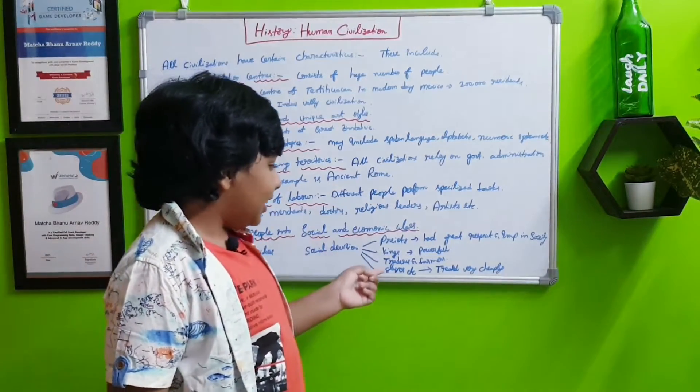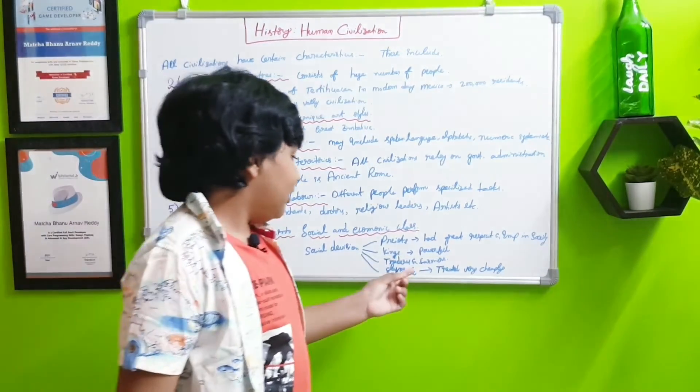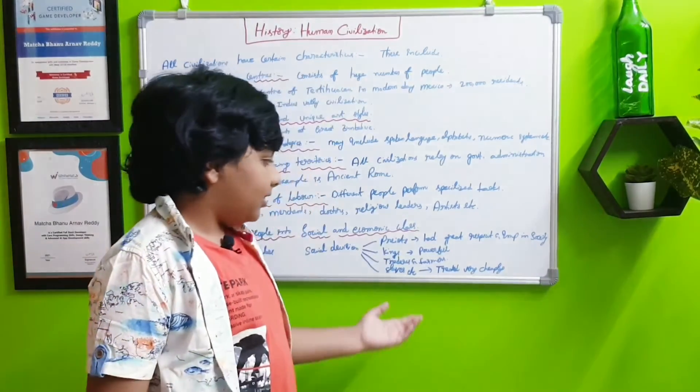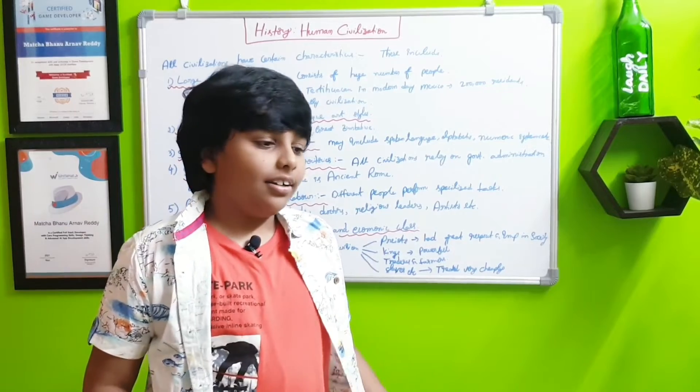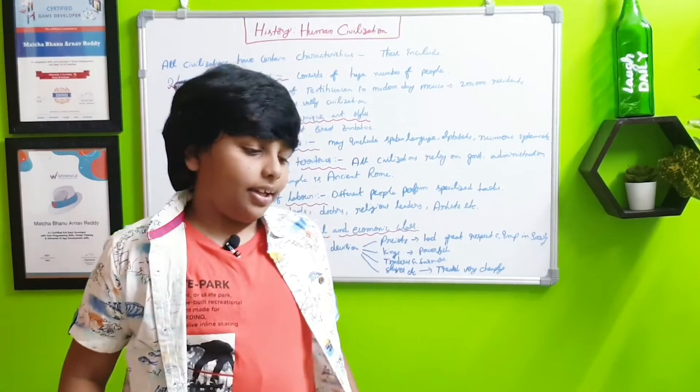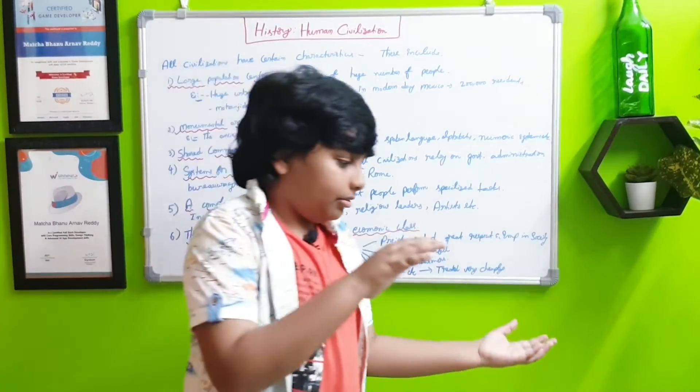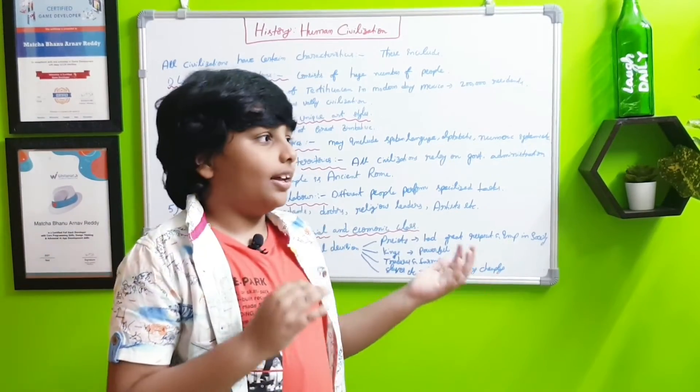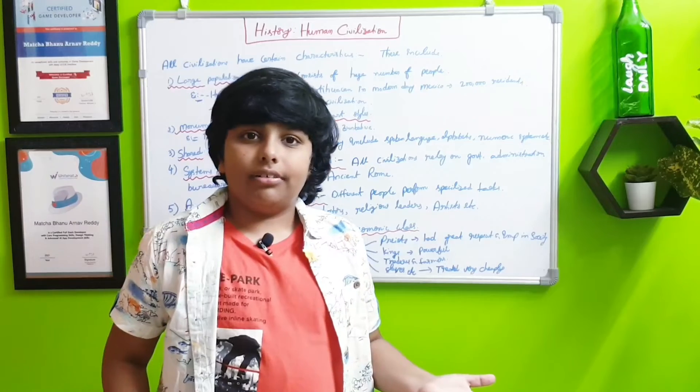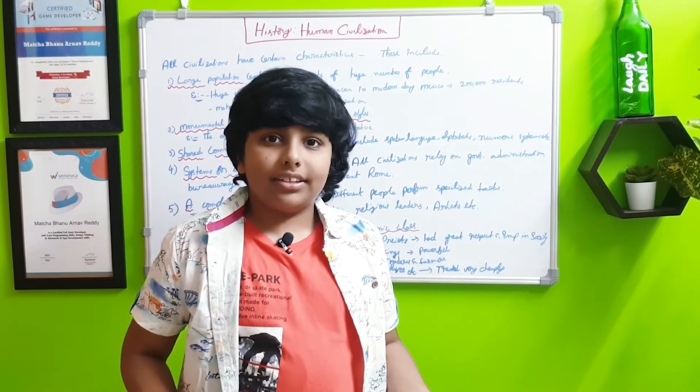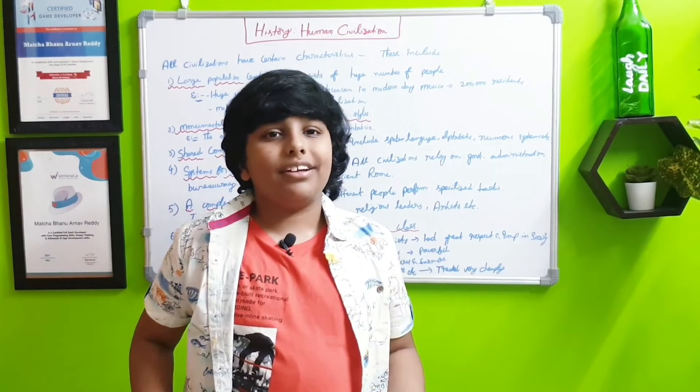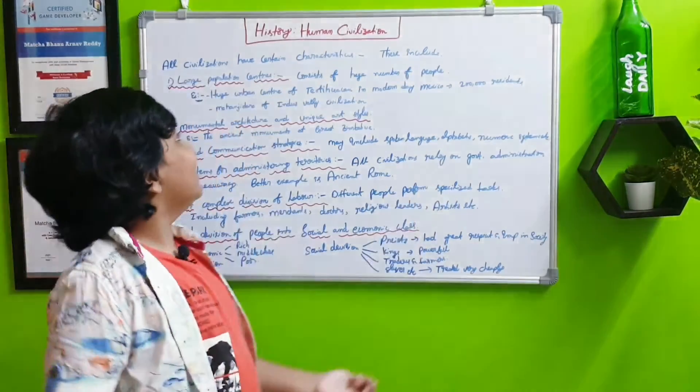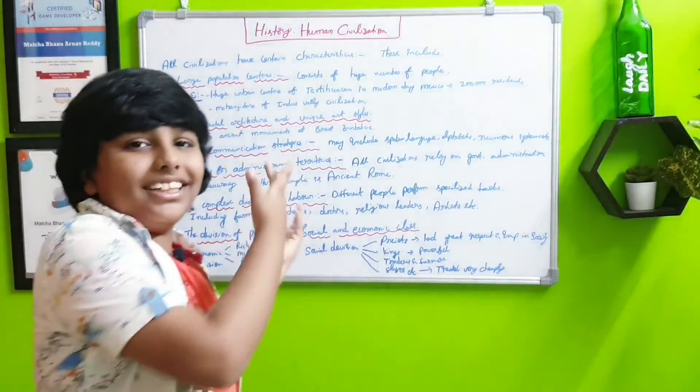And the last one: slaves and other people. These people were treated very cheaply. That means they were used, they plowed places for their land owners. Yeah, that is very bad, but now slavery is abolished so be happy. So this is for today about human civilization. Bye.